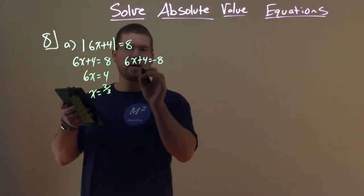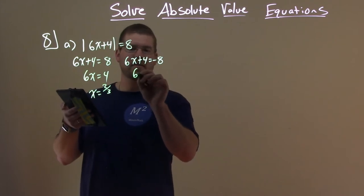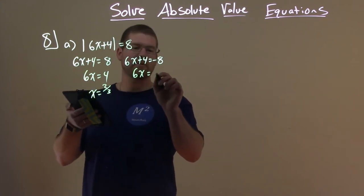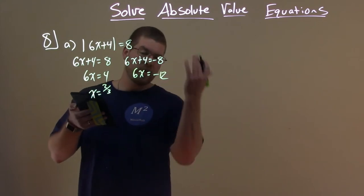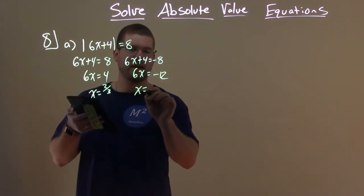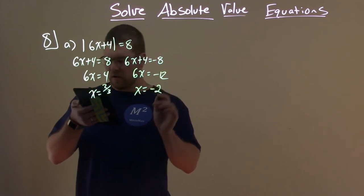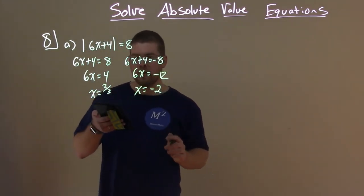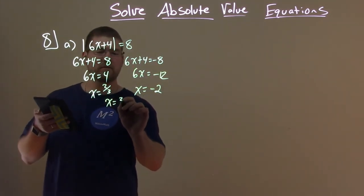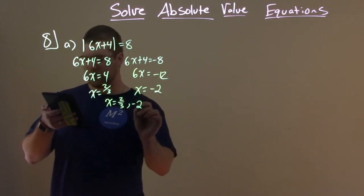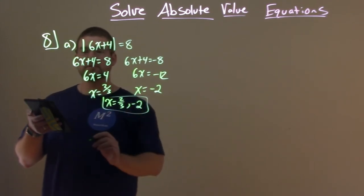Same here. Subtract 4 from both sides. 6x equals negative 8 minus 4, negative 12. Divide both sides by 6. And x equals negative 12 divided by 6, which is negative 2. So we have two solutions here. We have x equals two-thirds and negative 2. So we got our two solutions.